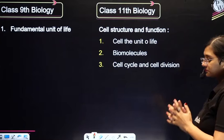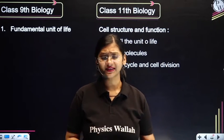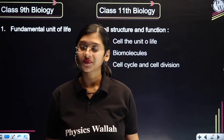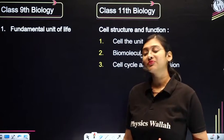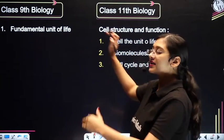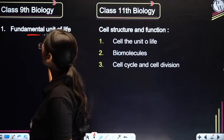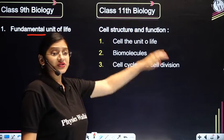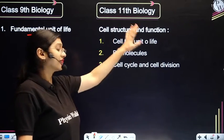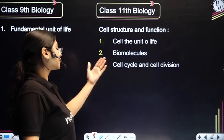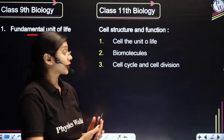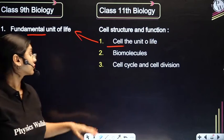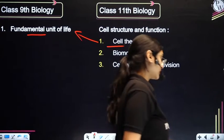It's not only 10th standard that is important — 9th standard science is equally important. Class 9th biology's Fundamental Unit of Life is all about the 11th standard unit Cell Structure and Function, which has three chapters: Cell Cycle and Cell Division, Biomolecules, and Cell — The Unit of Life. To understand these chapters, you must know the Fundamental Unit of Life.